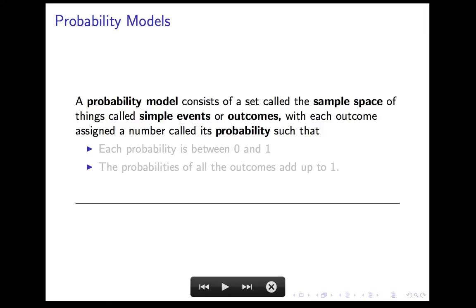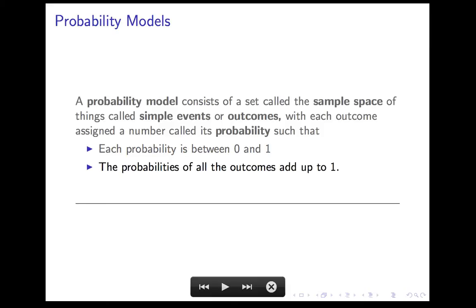So how do we represent that mathematically? Here's where the really formal stuff comes in. We represent these situations by a probability model. A probability model consists of two things: one is a set called the sample space, whose elements are called simple events or outcomes — it's meant to be all the possible outcomes of this repeatable process. The second thing is that each outcome is assigned a number called its probability, with two properties: each probability is between 0 and 1, and if you add up the probabilities of all the outcomes, they add up to 1.